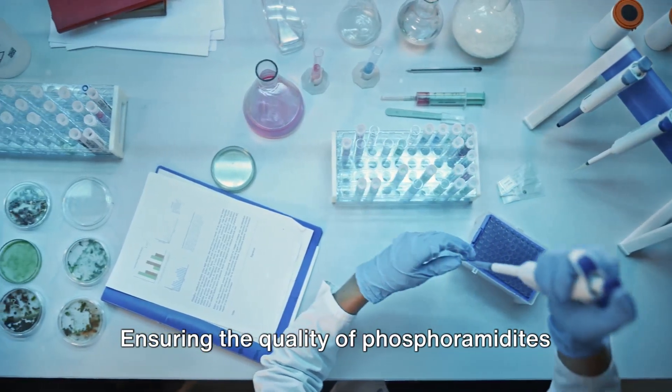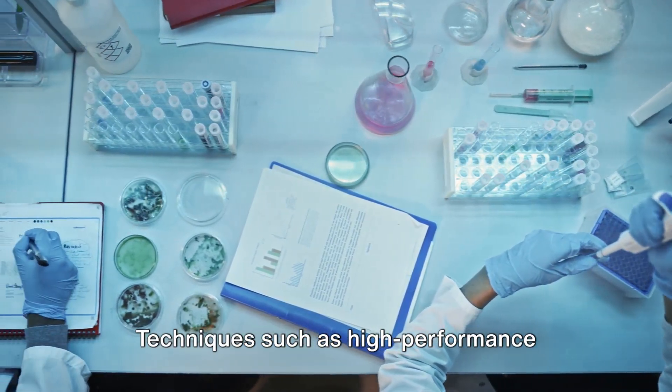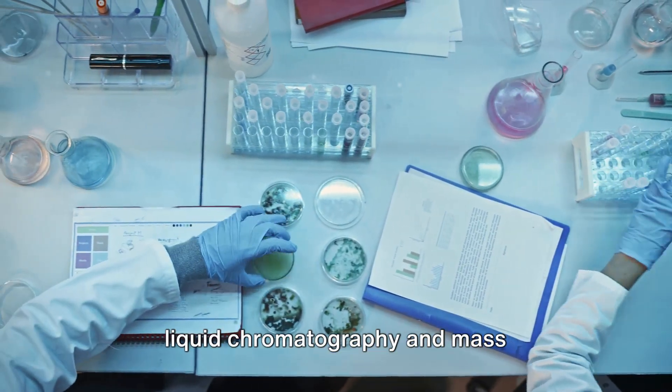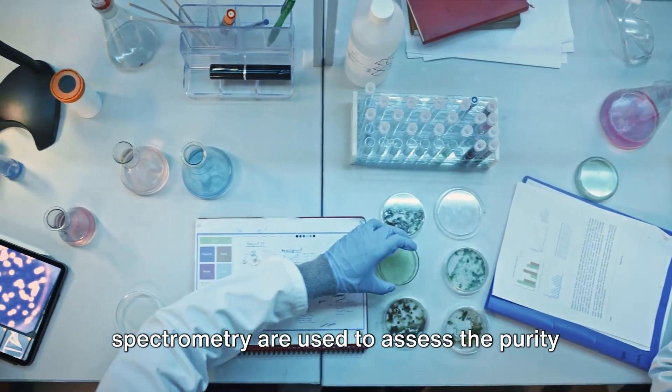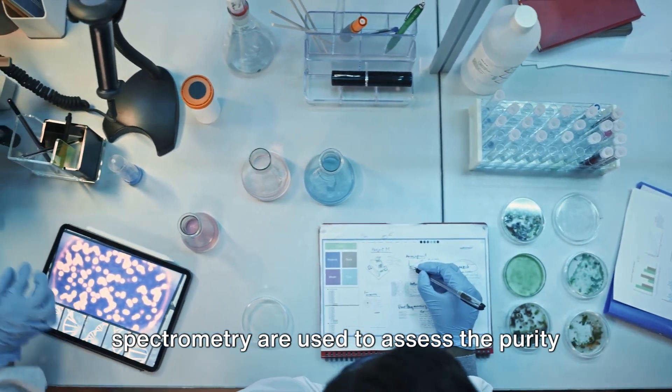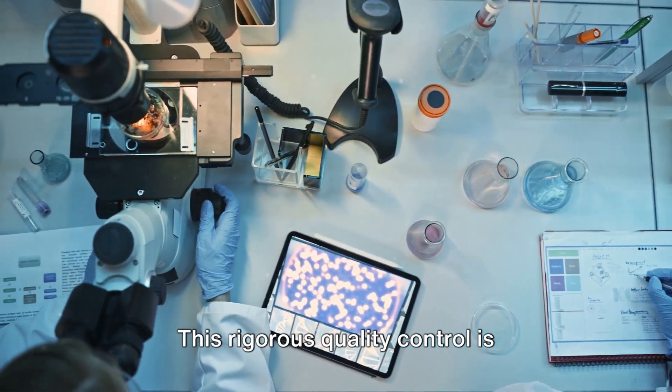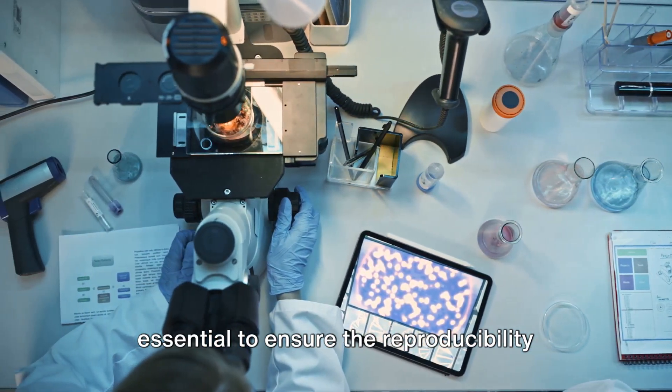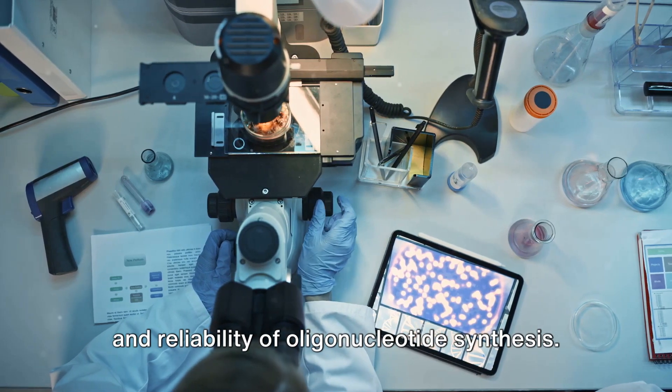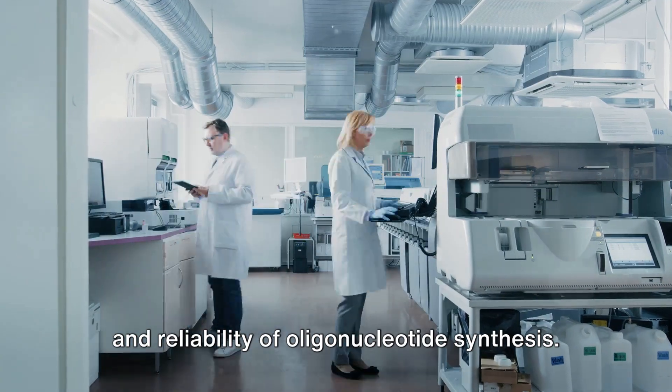Ensuring the quality of phosphoramidites is paramount. Techniques such as high-performance liquid chromatography and mass spectrometry are used to assess the purity and quality of these compounds. This rigorous quality control is essential to ensure the reproducibility and reliability of oligonucleotide synthesis.